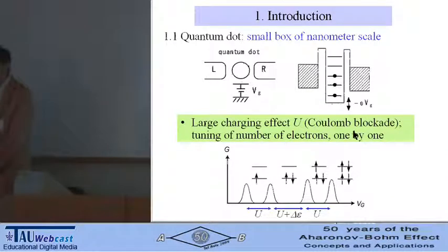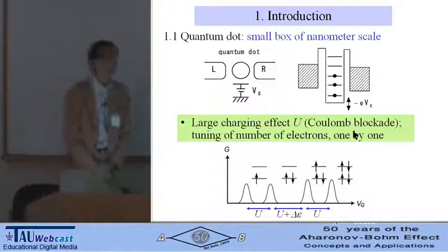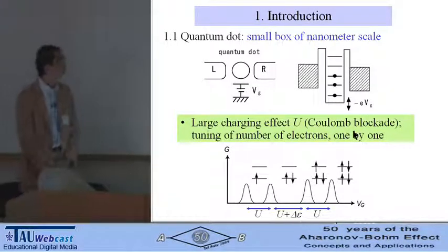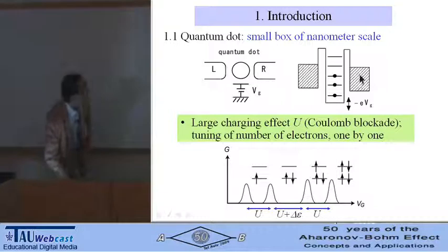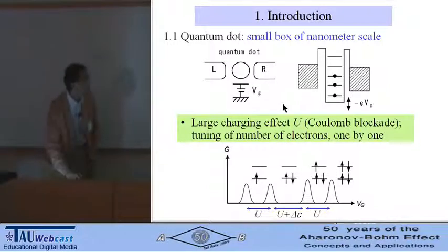In the introduction, let me start with the quantum dot. A small box of nanometer scale couples to two leads. Energy levels are discretized in the quantum dot. With large charging energy U, so-called Coulomb blockade, you can tune the number of electrons in the quantum dot one by one using the gate voltage.